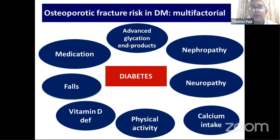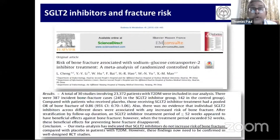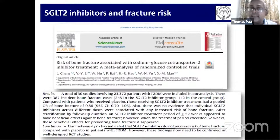We know that fracture risk is multifactorial — risk for fall and risk for fragility. Medications like pioglitazone we all know from medical school. There was a recent concern about SGLT2 inhibitors and fracture risk. However, a recent meta-analysis concluded there is no increased fracture risk associated with SGLT2 inhibitors — of three meta-analyses, one was inconclusive, one suggested fracture risk, and the most recent says there is no increased risk.